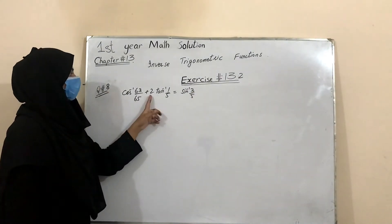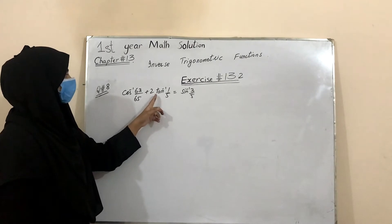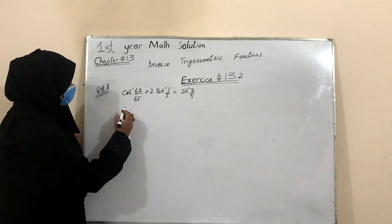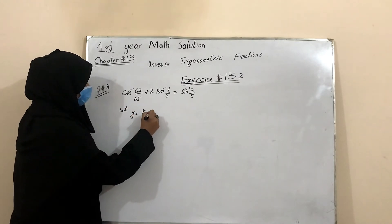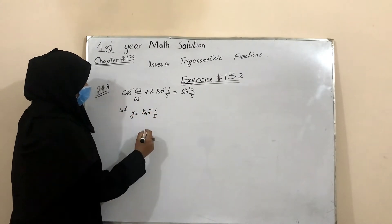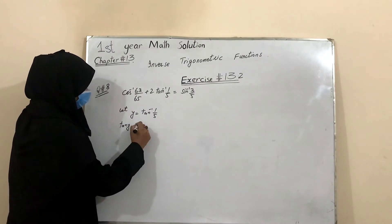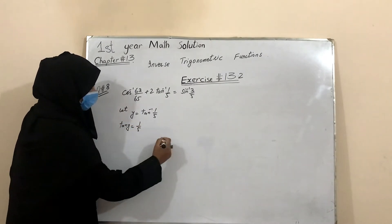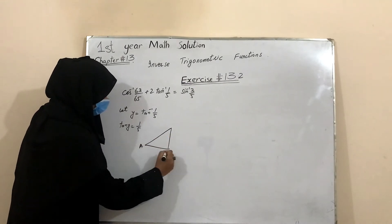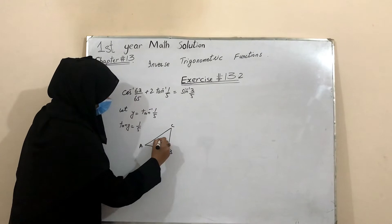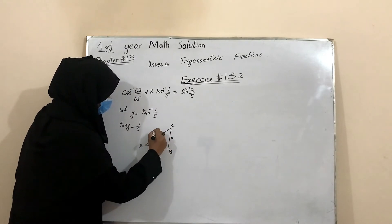Question number 8. If we have 2·tan⁻¹(1/5), let y = tan⁻¹(1/5), so tan y = 1/5, which means sin⁻¹(1/5) relationship is established.